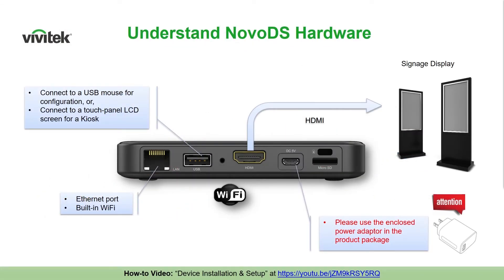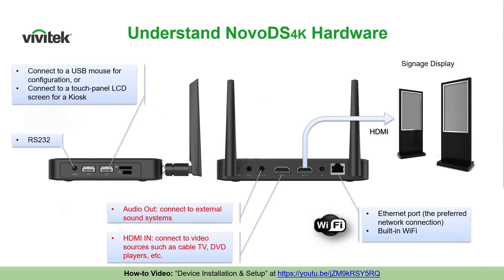Now let's discuss the hardware. Here is an image of our base unit, the Nova DS. Moving from left to right, we have an Ethernet and Wi-Fi capable device with a USB port for keyboard and mouse configuration, or it could be connected to an interactive display. The HDMI port supports 720p, 1080p, and 4K at 30 frames per second video resolutions. Moving on to the Nova DS 4K, this unit is able to support 4K video at 60 frames per second. It also has external antennas, dual USB, a dedicated RS-232 port, and a major differentiator — a live HDMI in for digital signage applications that want to incorporate live TV broadcasts like news or sports.